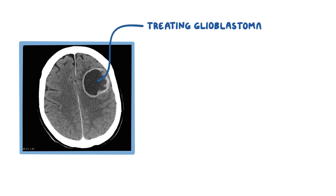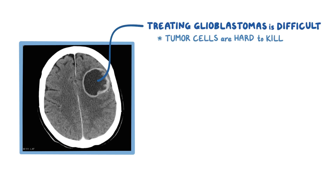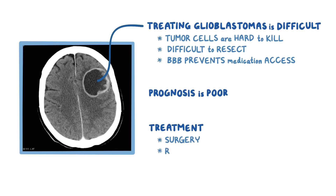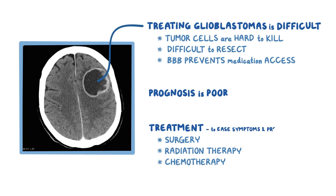Treating glioblastoma is particularly difficult because the tumor cells don't die with conventional therapies. To make matters worse, the tumor often spreads out, making surgical resection harder. And the blood-brain barrier prevents many medications from accessing the tumor. In general, there's usually a poor prognosis, and treatment with surgery, radiation therapy, and chemotherapy is generally used to ease symptoms and prolong life, rather than curing the disease.